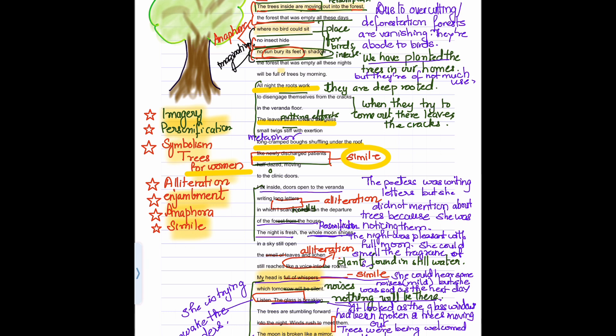The forest that was empty all these nights will be full of trees by morning. Here the poetess is optimistic. She says the forest will be full of trees. So they have to work hard. All night the roots work. Again it is personification.